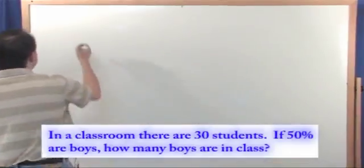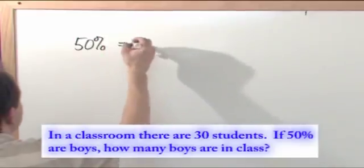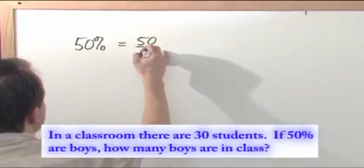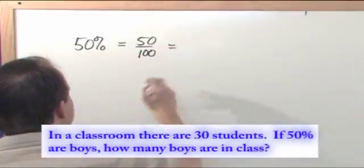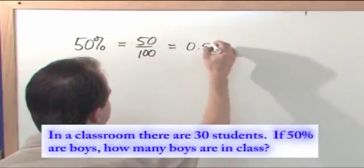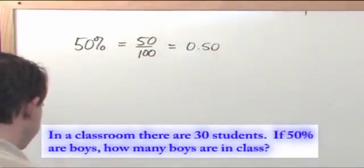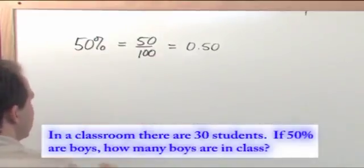Don't forget that when you have 50% of something, that can be expressed as 50 over a hundred, which we've already talked about. It can also be expressed as a decimal, which is taking this decimal and moving it two places, 0.50. That is a decimal representation of this percent.